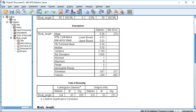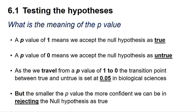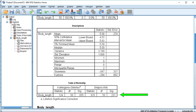SPSS gives us several output boxes. The first box I'm interested in is the test of normality. We can see that the Shapiro-Wilk test has given us a significance of 0.231. A p-value of 1 means we can accept the null hypothesis as true, whereas a p-value of 0 means we can accept the null hypothesis as untrue. The transition point between true and untrue is set at 0.05 in the biological sciences. The smaller the p-value below 0.05, the more confident we can be in rejecting the null hypothesis. A probability of 0.231 is above our 0.05 transition probability, indicating that we cannot reject the null hypothesis and that there is not a significant difference between the distribution of our data and that expected if it was normally distributed.